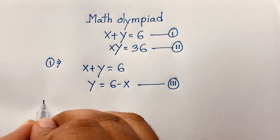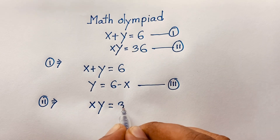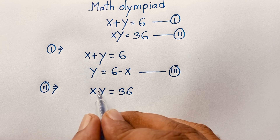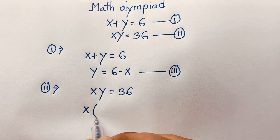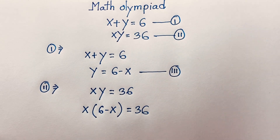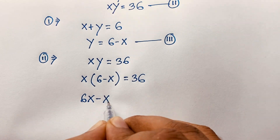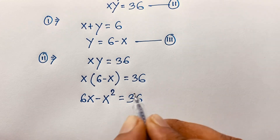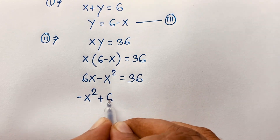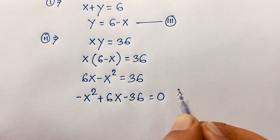Now I take our second equation: x times y is equal to 36. I substitute the value of y into this equation, so x times (6 minus x) equals 36. Expanding: 6x minus x squared is equal to 36.